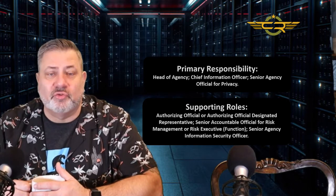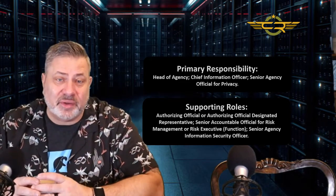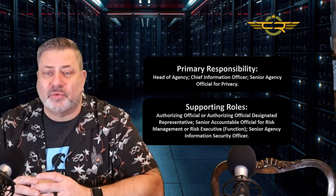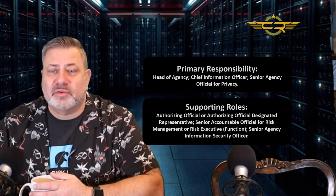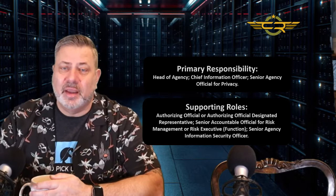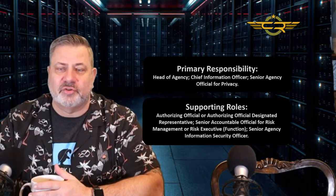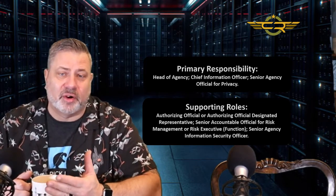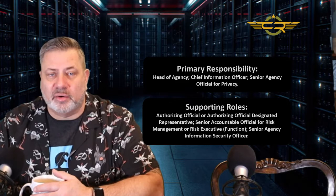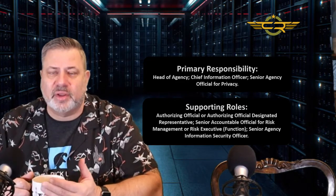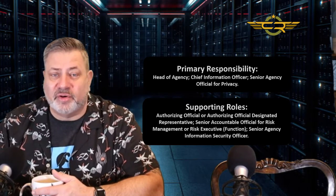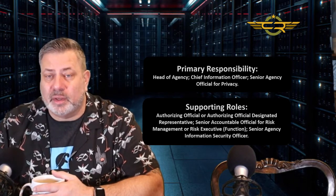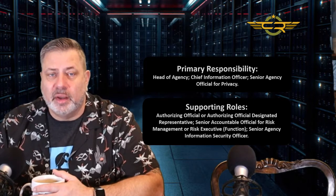The Chief Information Officer and the Senior Agency Official for Privacy are also responsible for this task. These high-level people are probably going to delegate it — that's where we see a lot of the supporting roles. The responsibility sits with the head of the agency, the CIO, and the Senior Agency Official for Privacy, but the supporting roles — such as the Authorizing Official or the Authorizing Official's Designated Representative — are the folks who often get tasked to do the actual work. The AODR is another role that gets tasked with a lot of things.